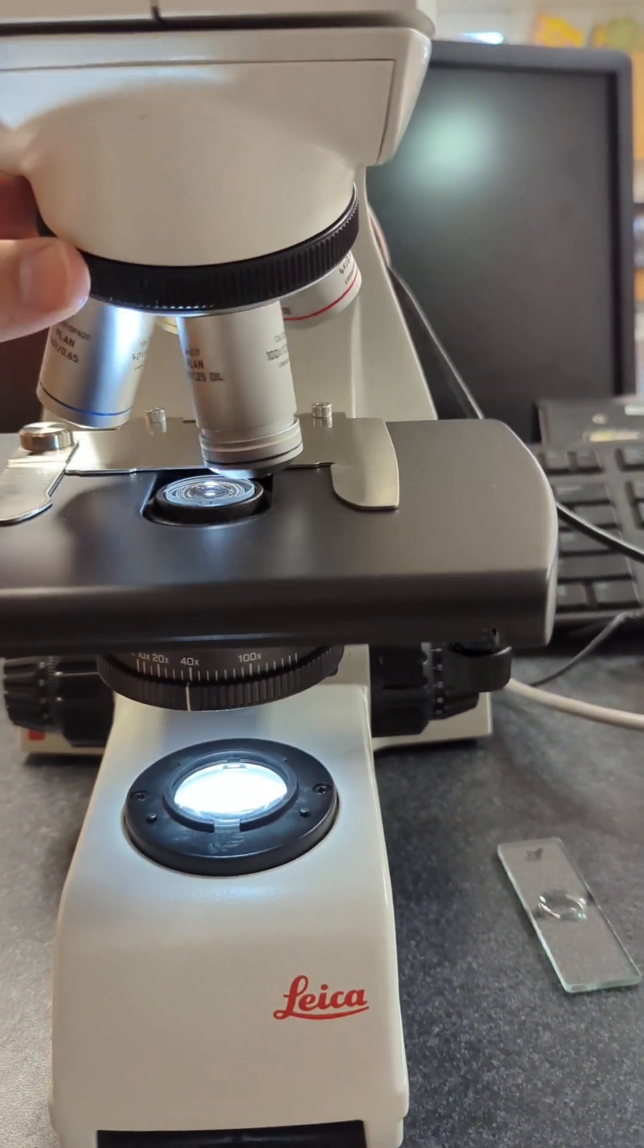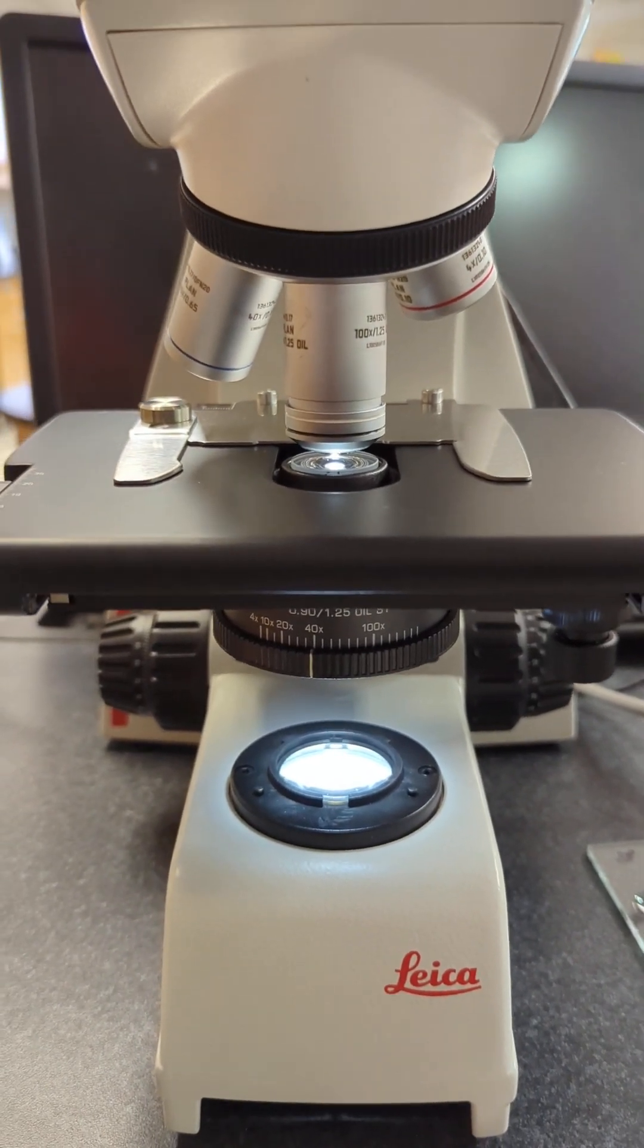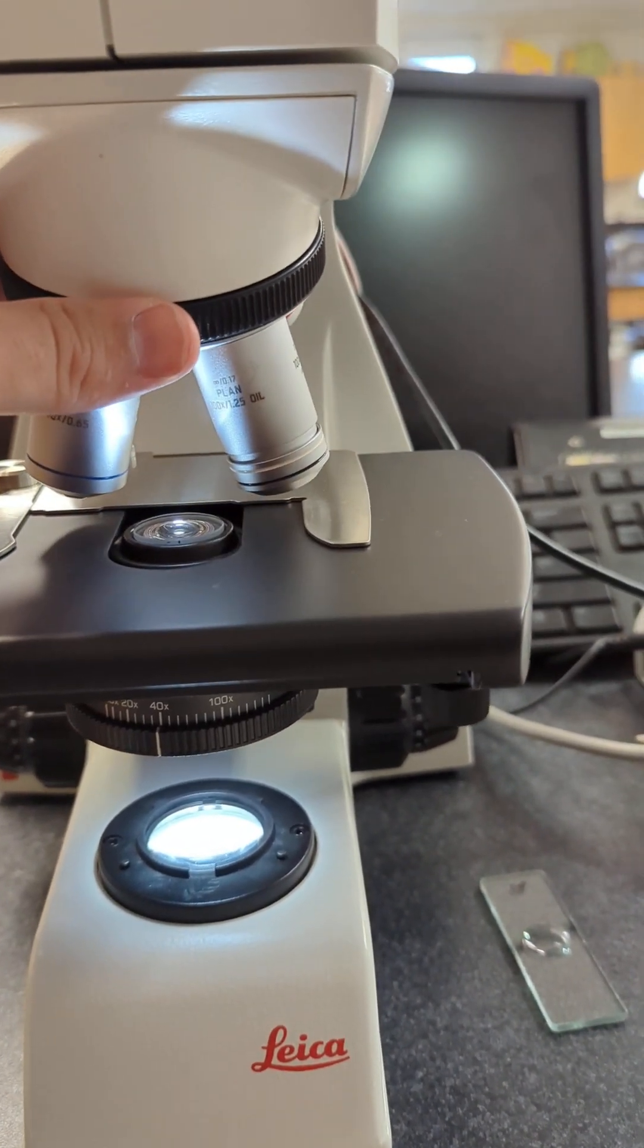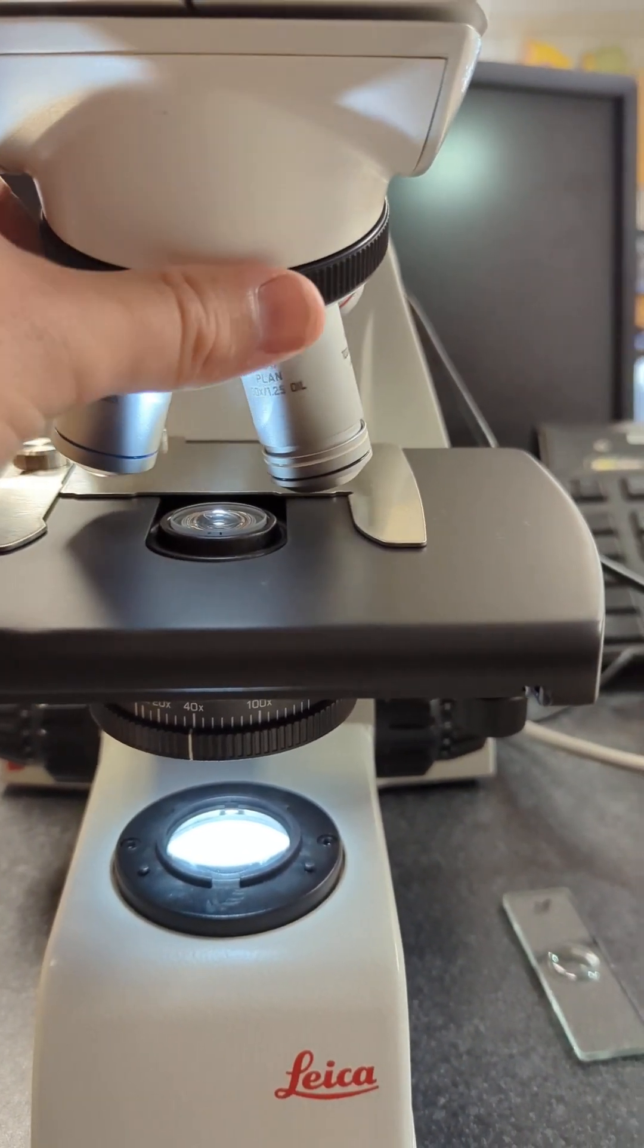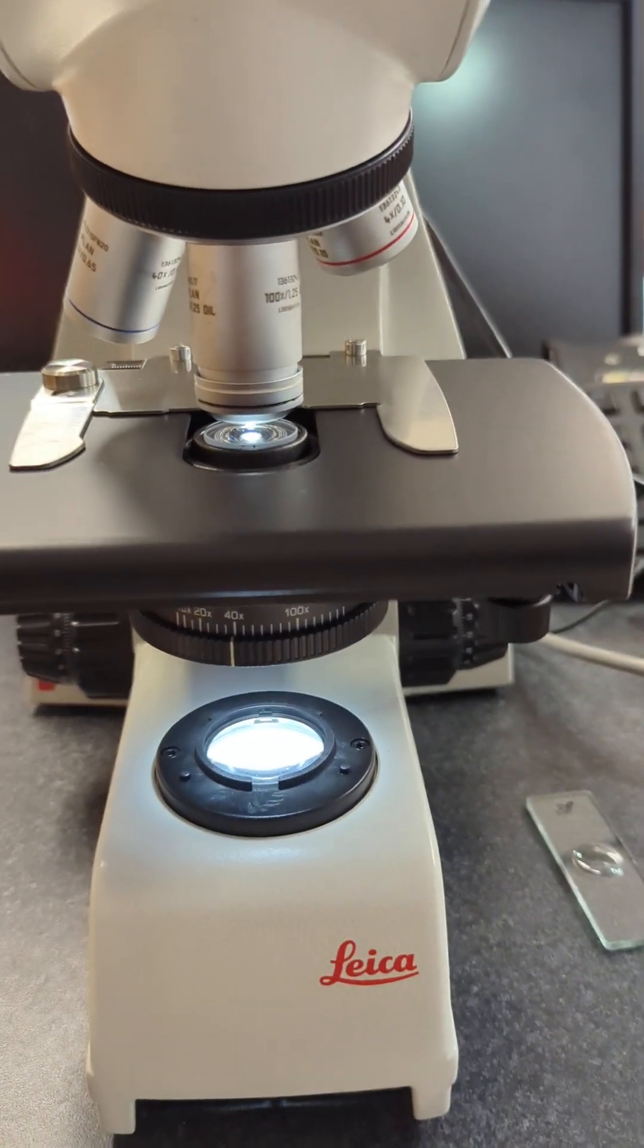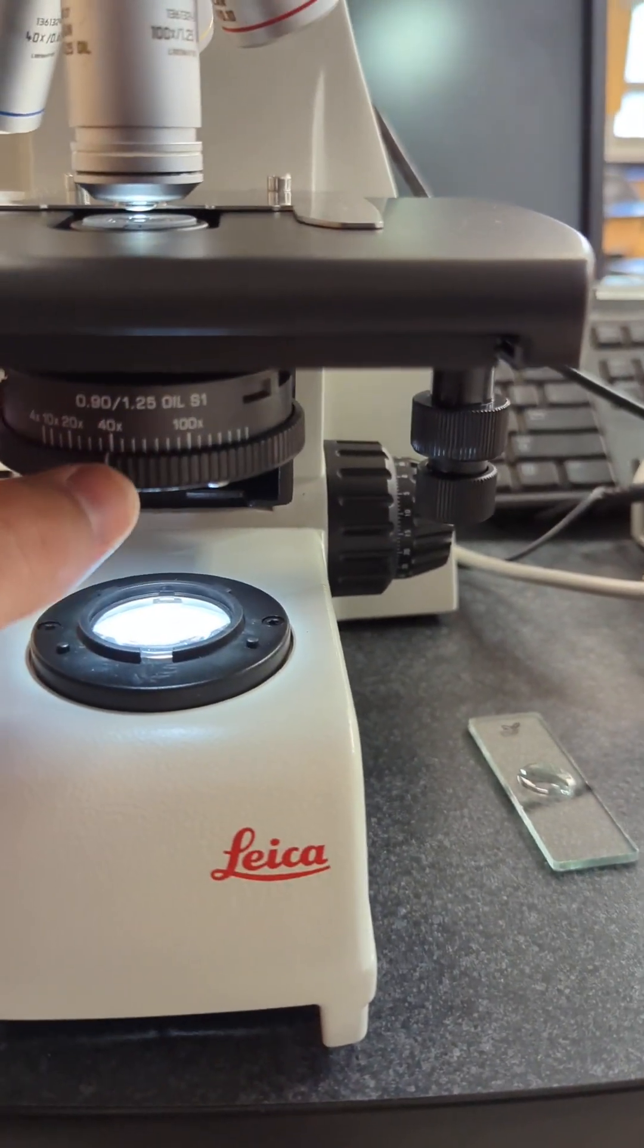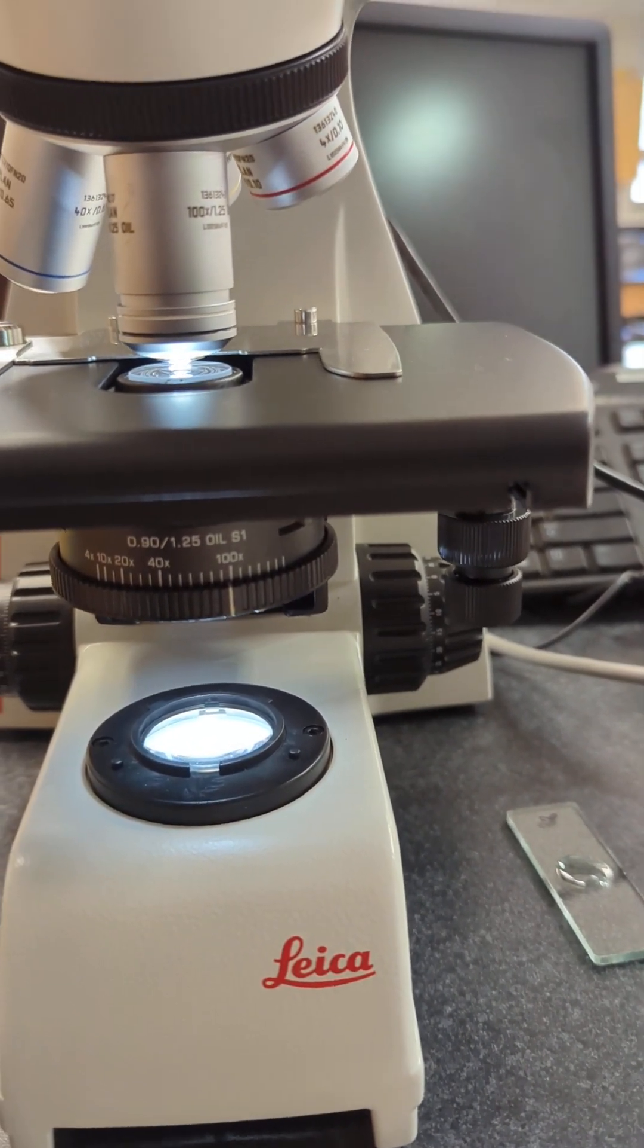Then obviously you have your 100x lens. The 100x is an oil lens, so you'd have to put a little drop of oil on there in between the lenses here, in between switching. Put a drop on the slide and then push the oil into place. When you're done with the oil, don't forget to move the condenser out to 100x. There you go, there's your 100x oil.